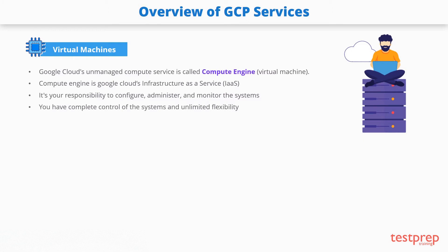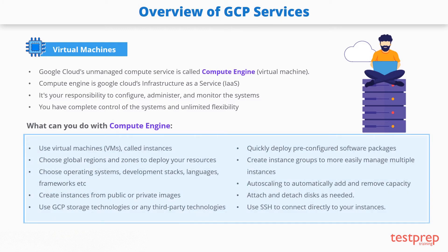The advantage is that you have complete control and unlimited flexibility. With Google Compute Engine you can use virtual machines called instances to build your application, much like using your own hardware infrastructure. You can choose from a variety of instance types to customize your configuration to meet your needs and budget. You can choose which global regions and zones to deploy your resources in, giving you control over where your data is stored. You can also select the operating systems, development stacks, languages, frameworks, services, and other software technologies as per your preference.